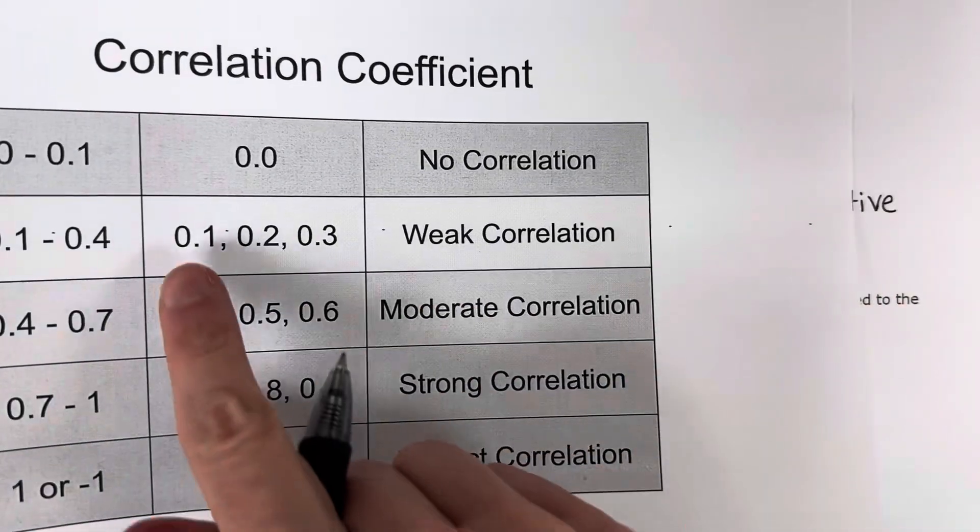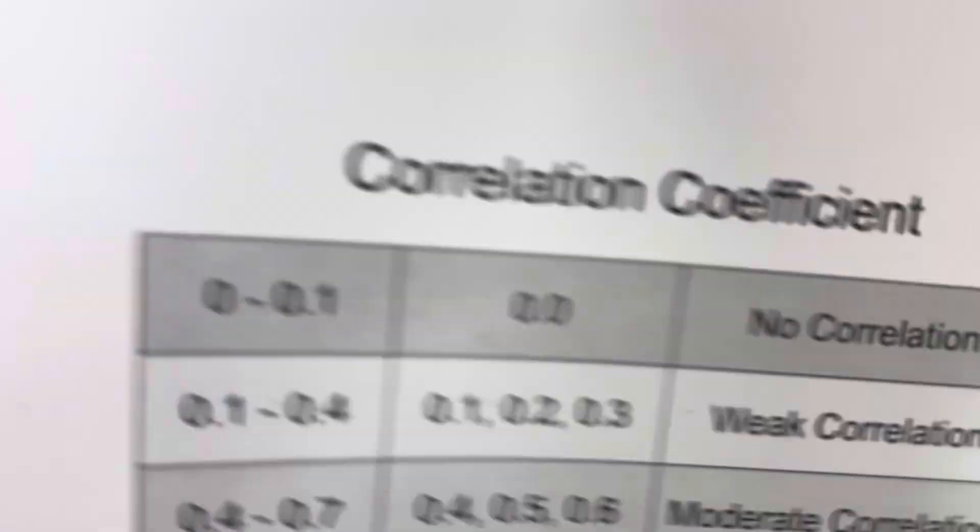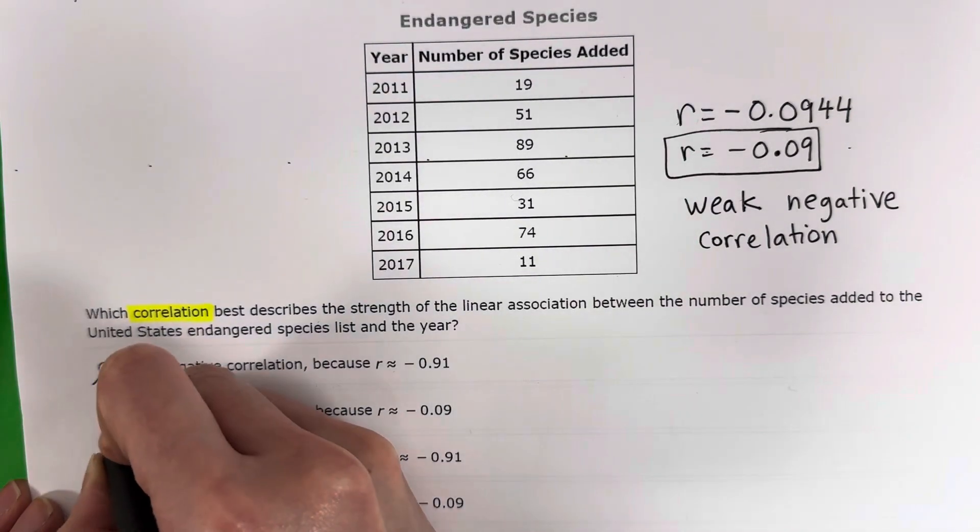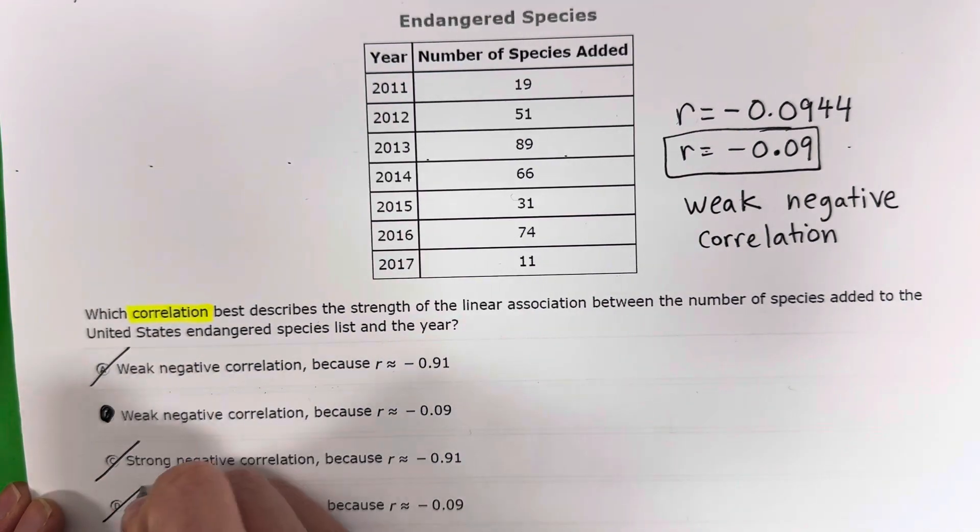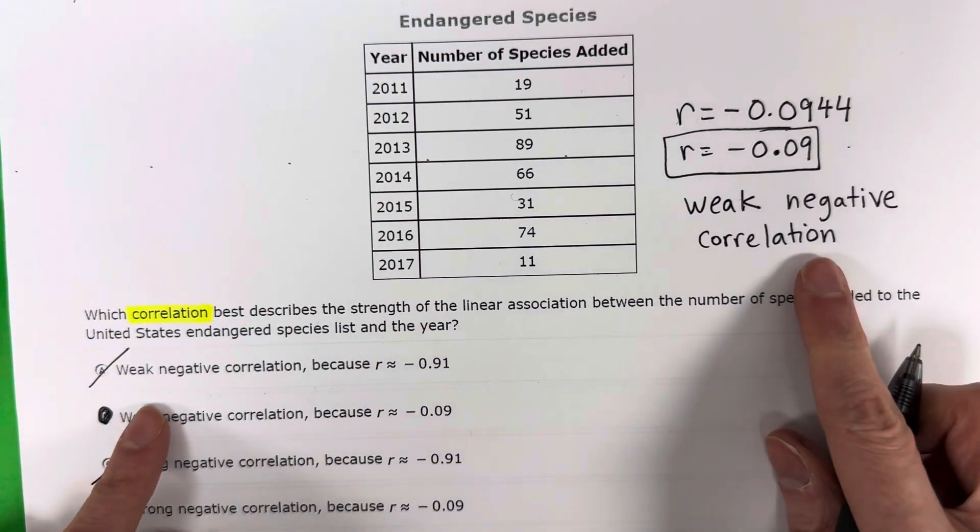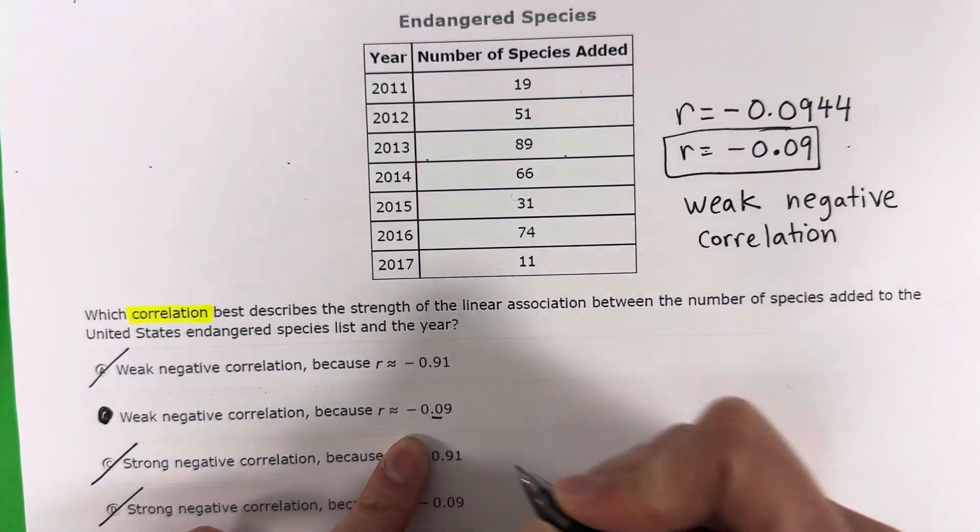Okay. Which would be closer to that 0.1, which is the weak. Okay. So my answer would be B here. It is not strong. It is a weak negative correlation because of that 0.0 there.